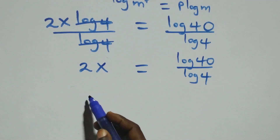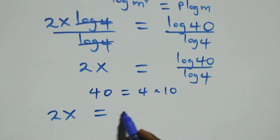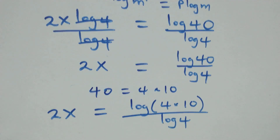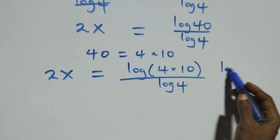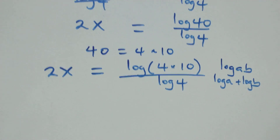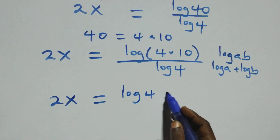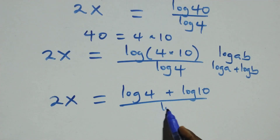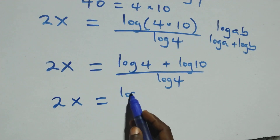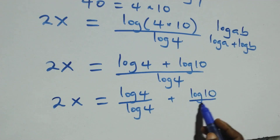Next, we express 40 as 4 times 10, so 2x equals log(4 times 10) over log 4. Using the law of logarithms, log(a times b) equals log a plus log b, so this becomes 2x equals (log 4 plus log 10) over log 4. We separate this into two fractions: 2x equals log 4 over log 4 plus log 10 over log 4.